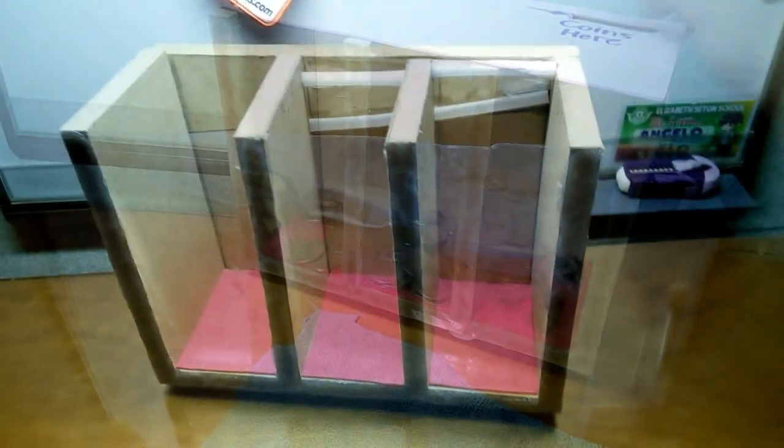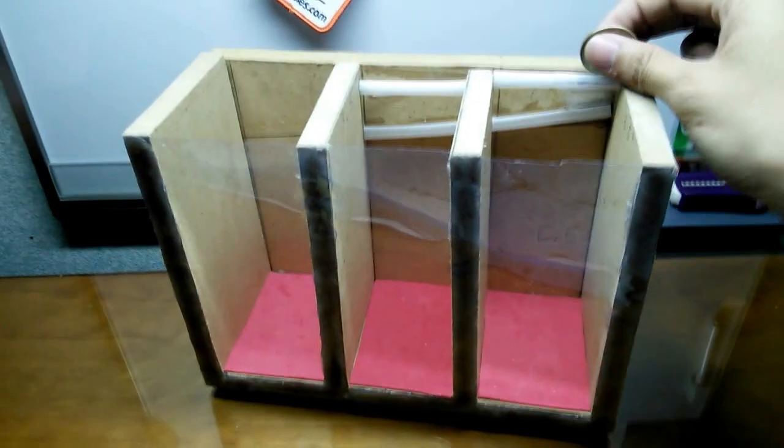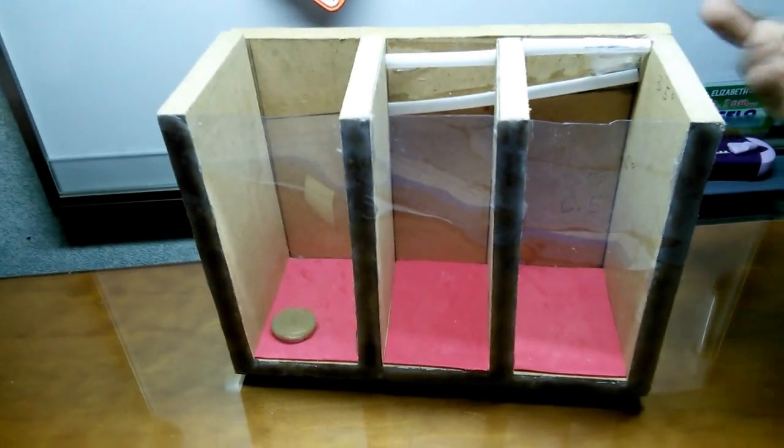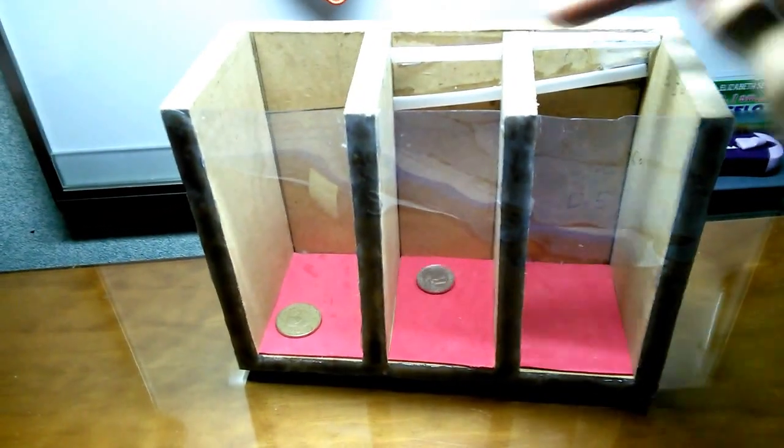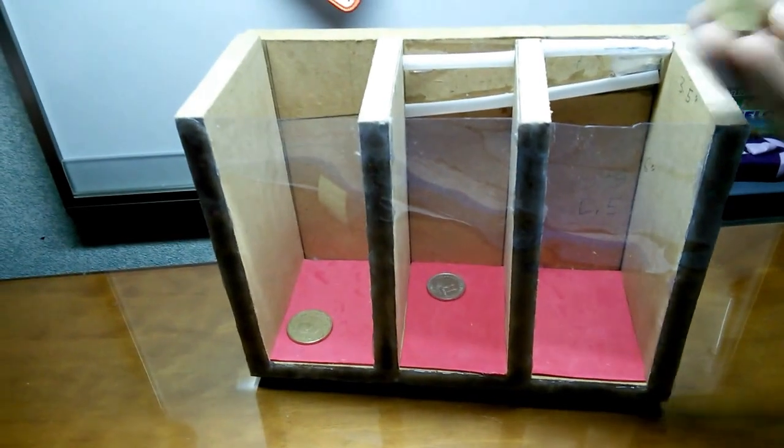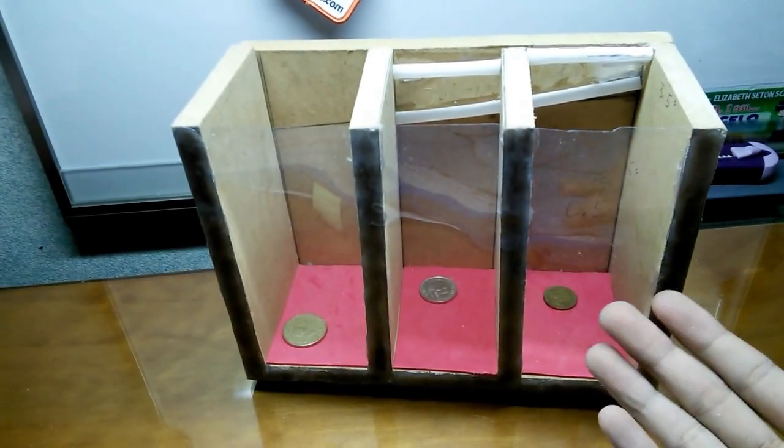The mechanism works by letting the coin slide through the straws, and if the coin is too big, then it'll pass through all the straws. When you have a medium-sized coin, it goes through the middle compartment. And when you have a really small coin, it just goes through the other compartment.